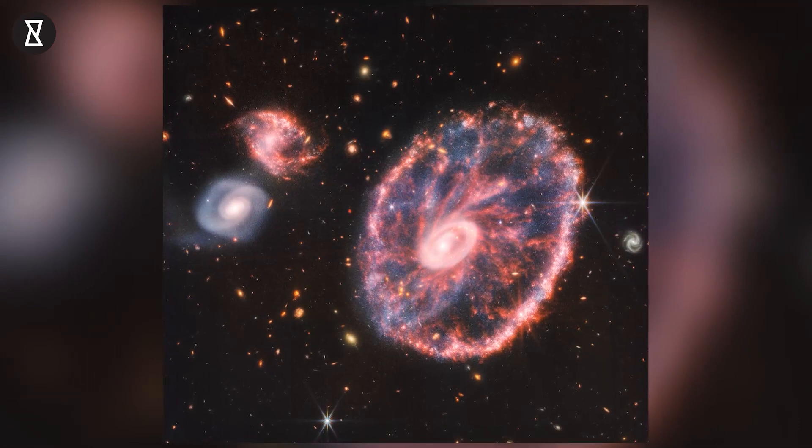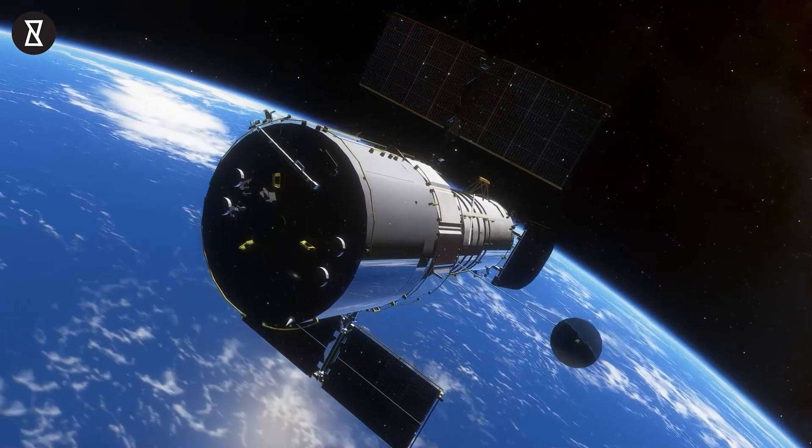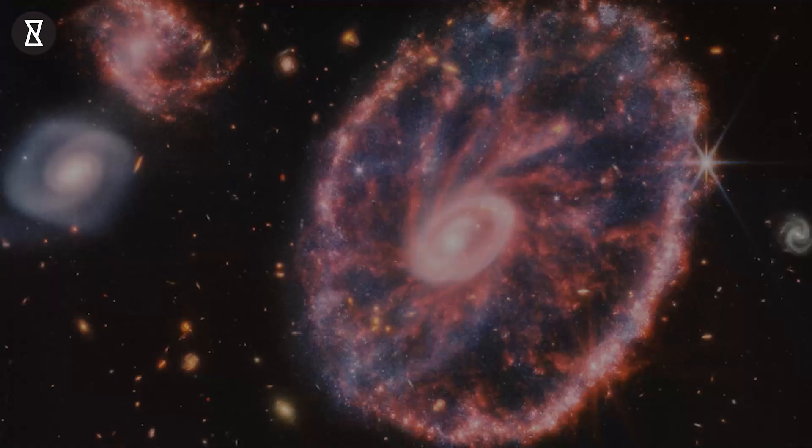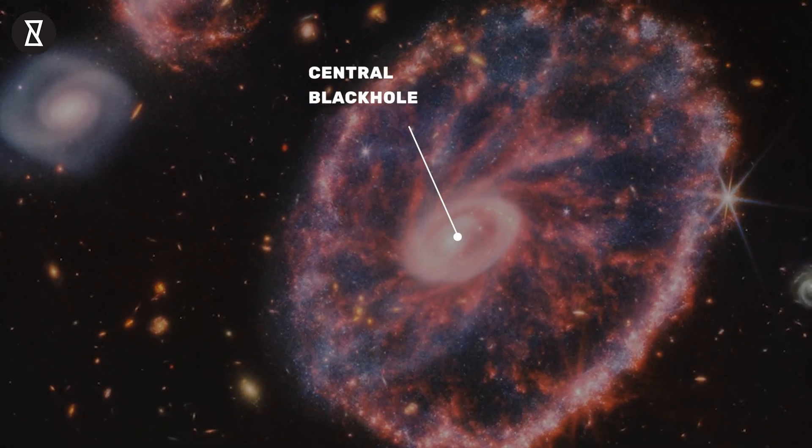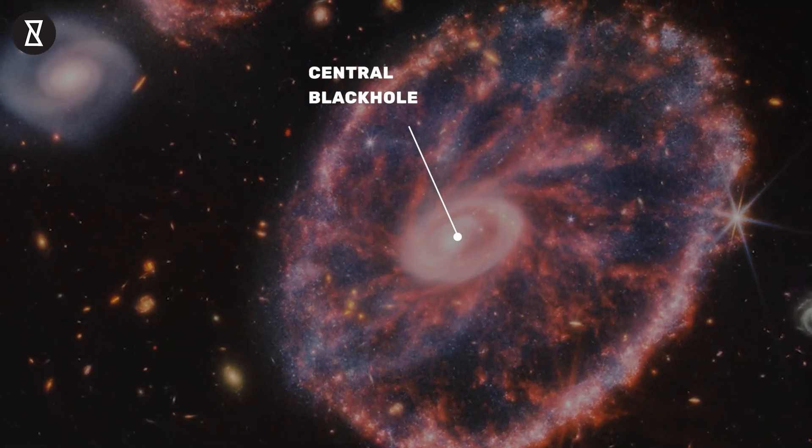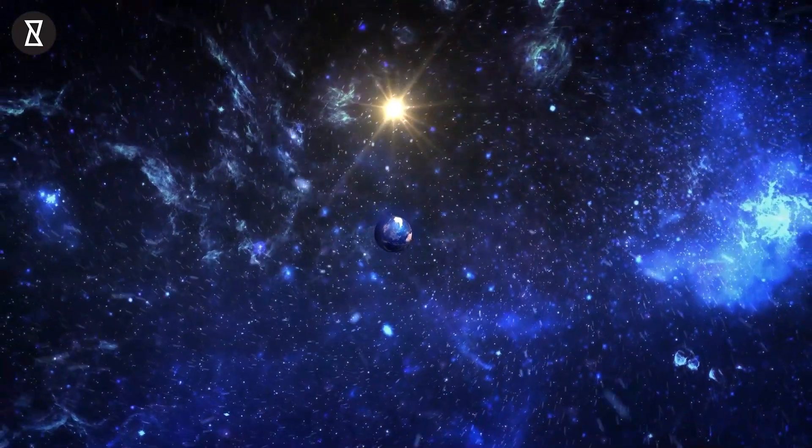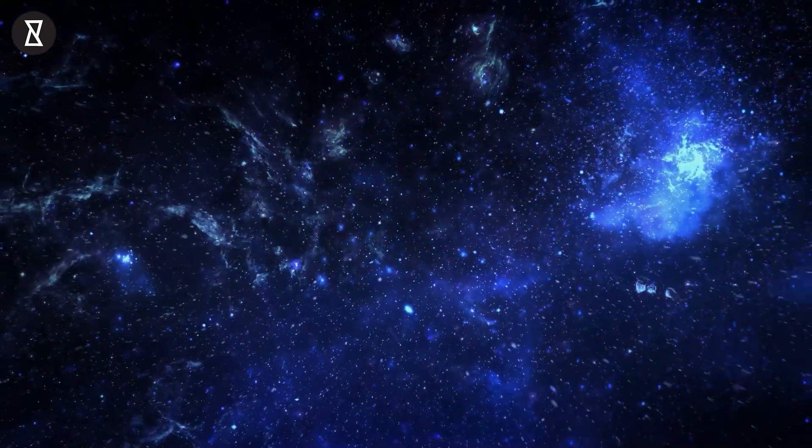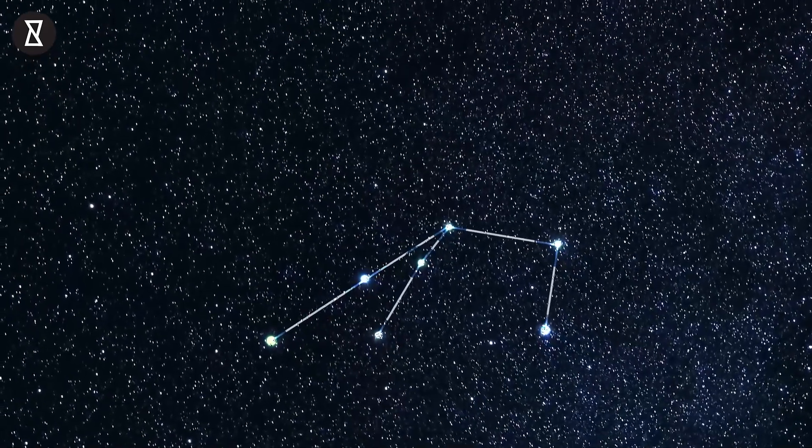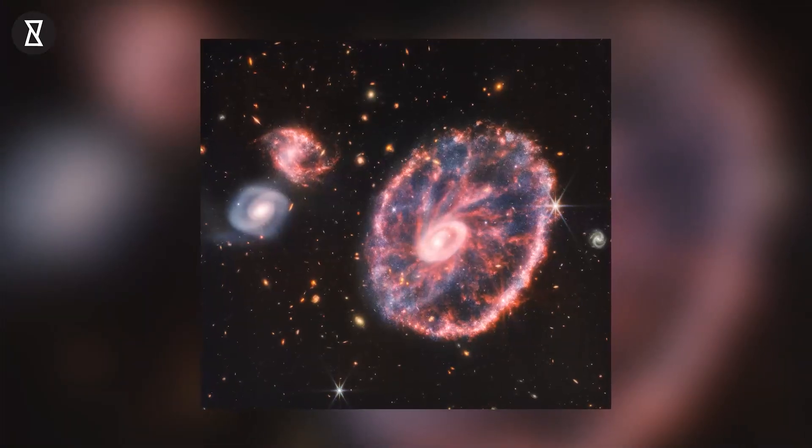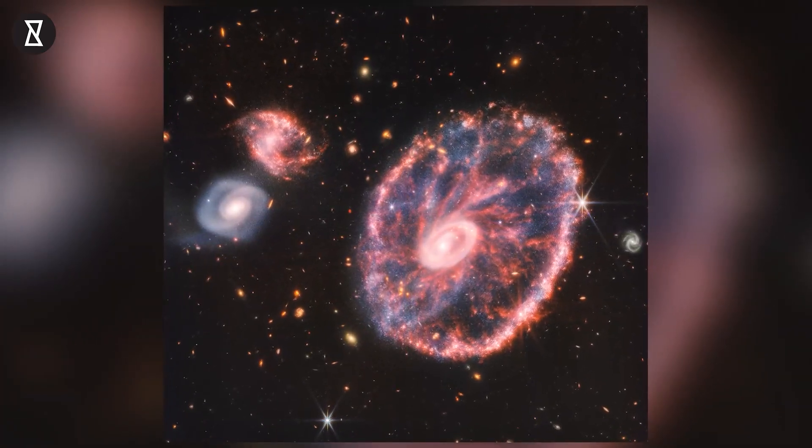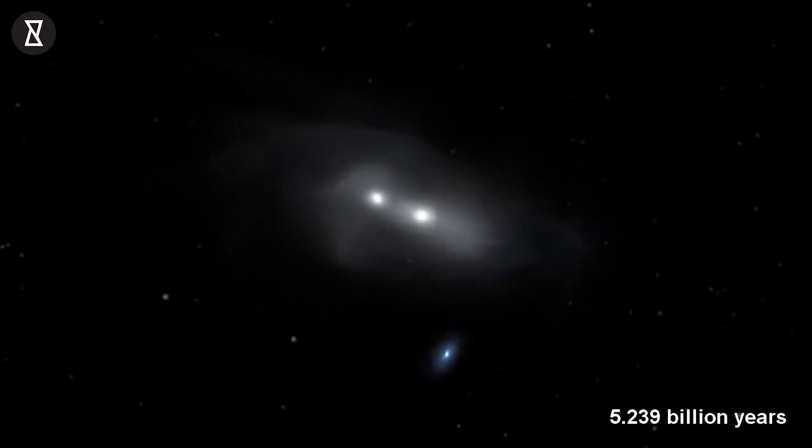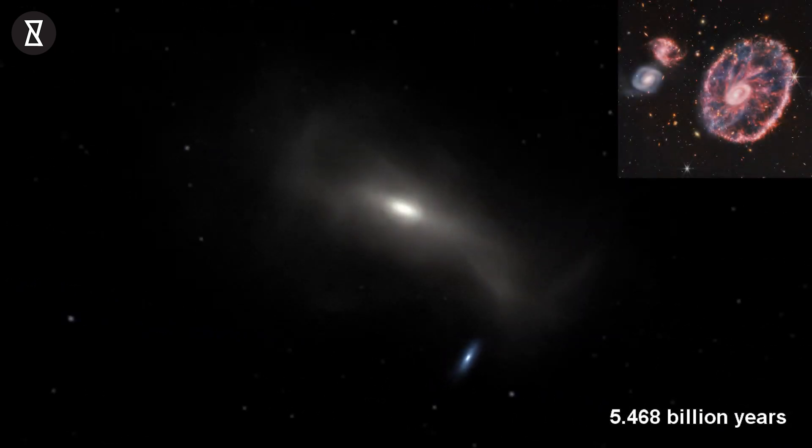was previously studied by the Hubble Space Telescope, but Webb's infrared gaze has revealed a plethora of previously unseen details in the galaxy's structure. The Cartwheel Galaxy, located about 500 million light-years away in the Sculptor constellation, is a rare sight. Its appearance, much like that of the wheel of a wagon, is the result of an intense event, a high-speed collision between a large spiral galaxy and a smaller galaxy not visible in this image.